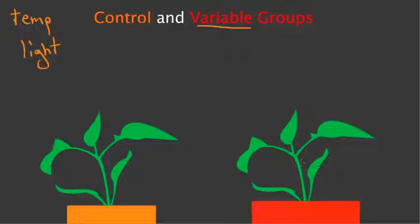And so this plant over here would be the variable group and this plant over here will be the control group.